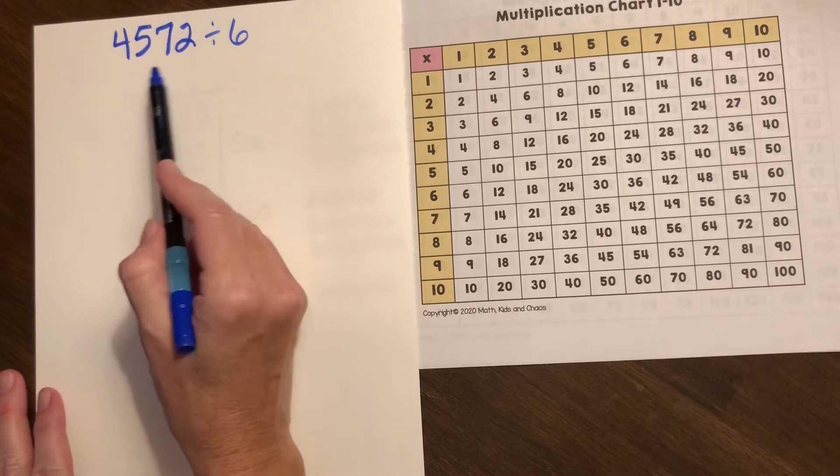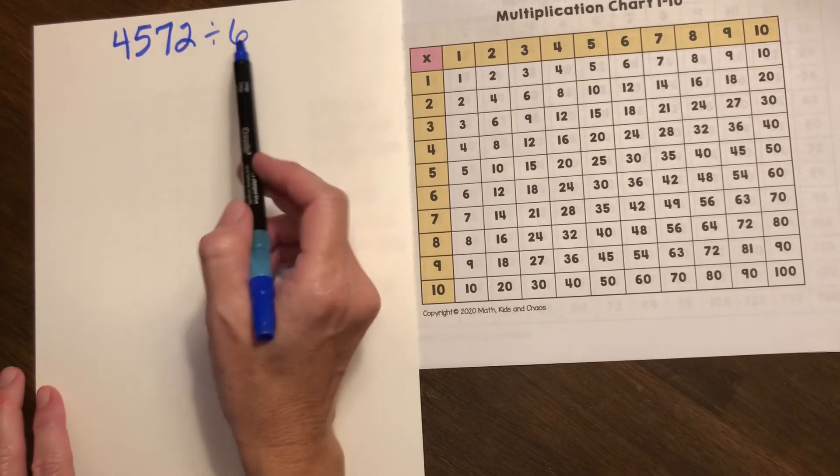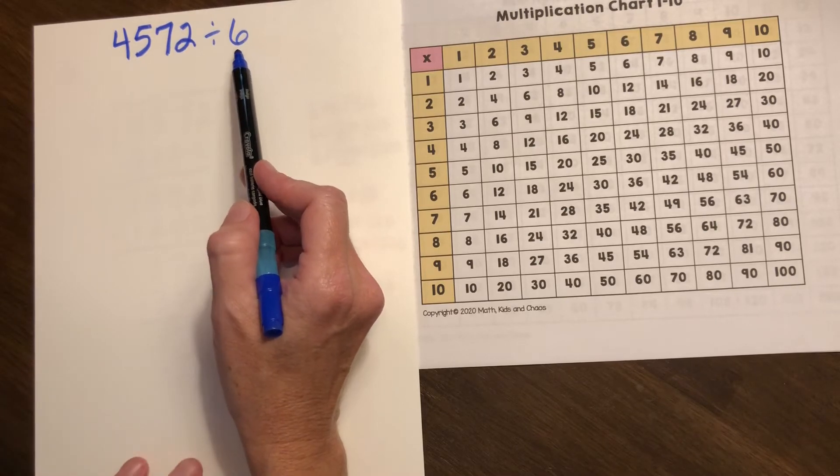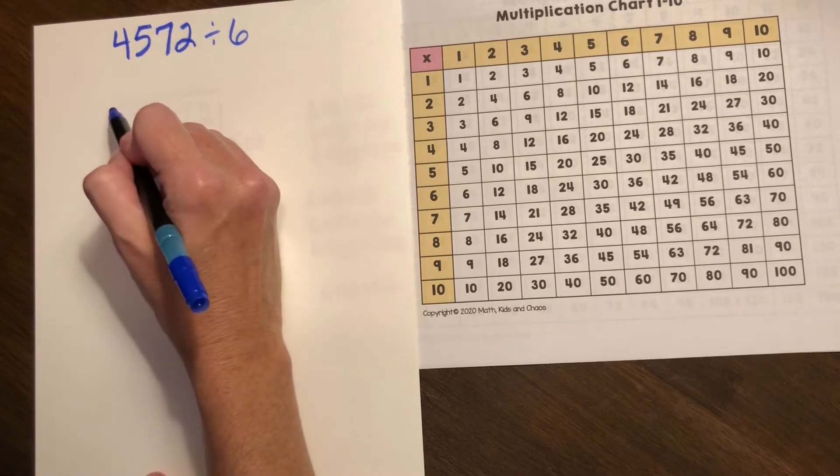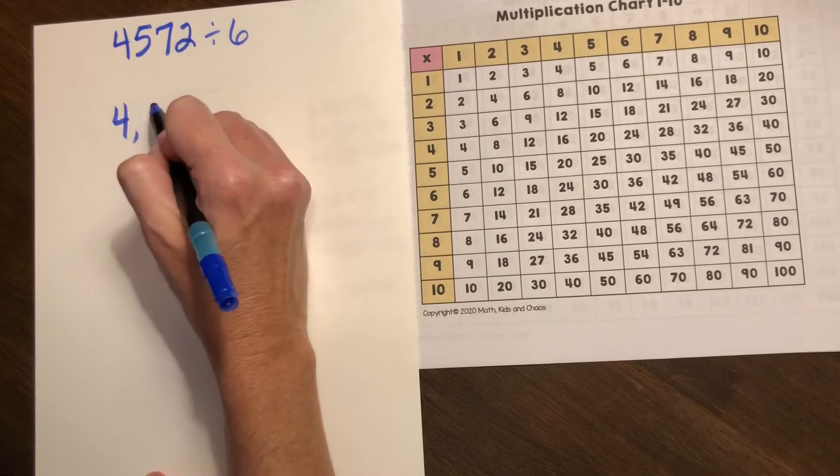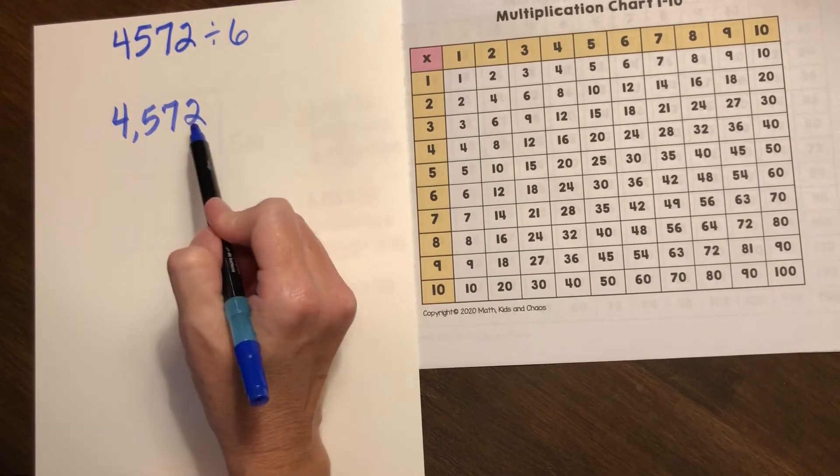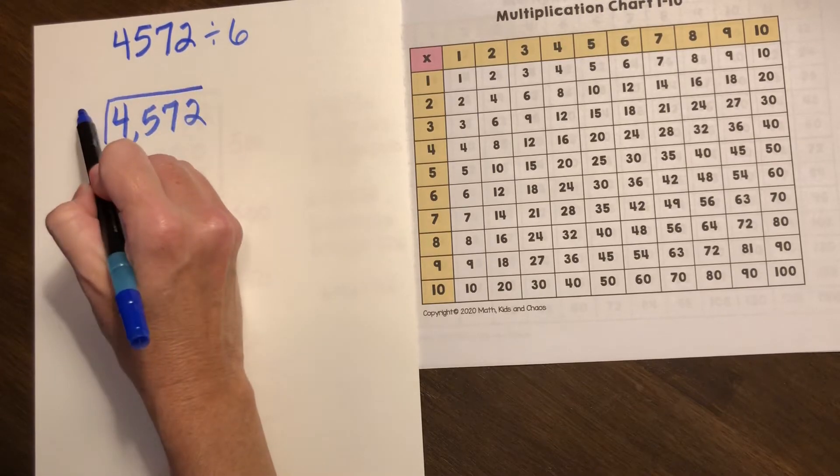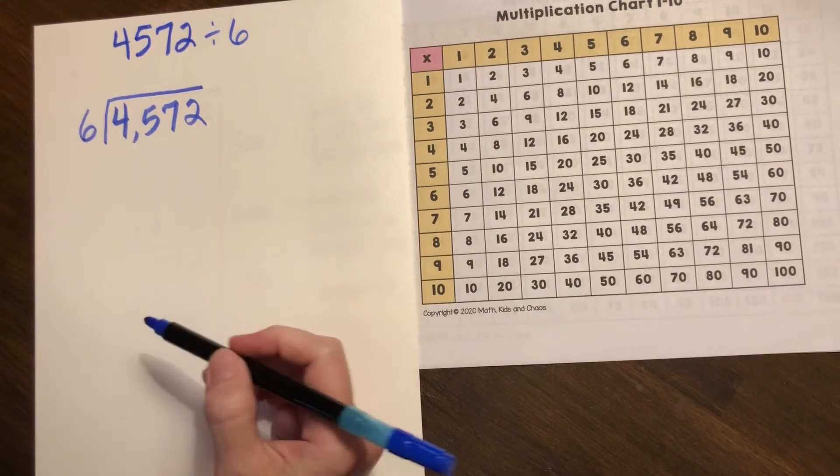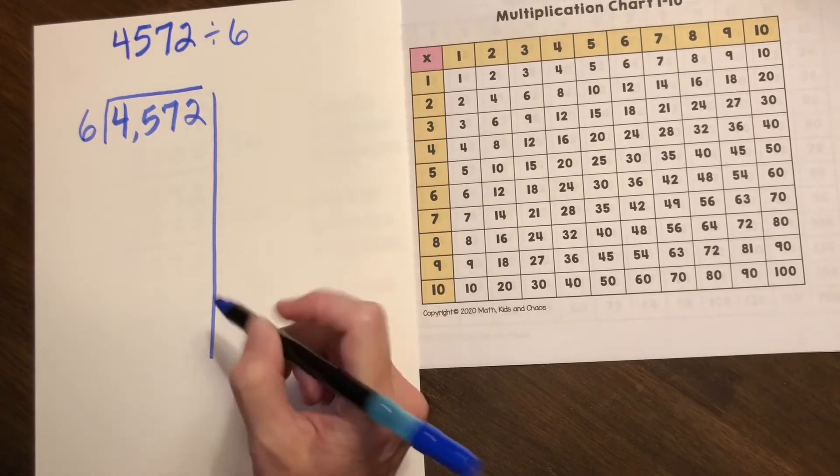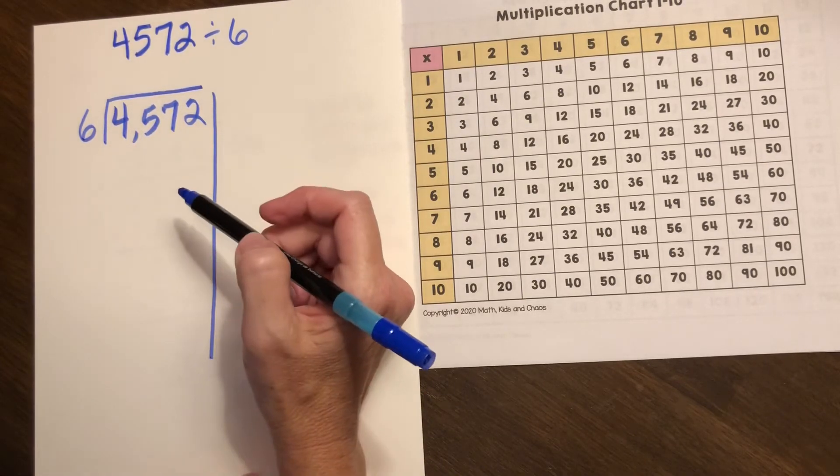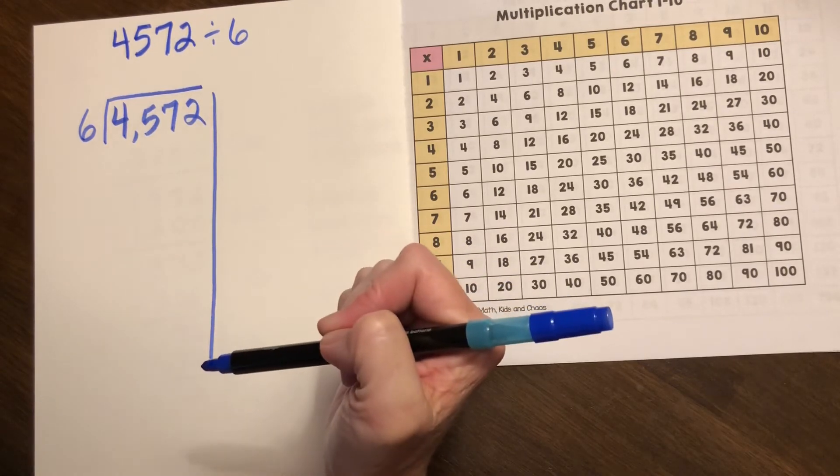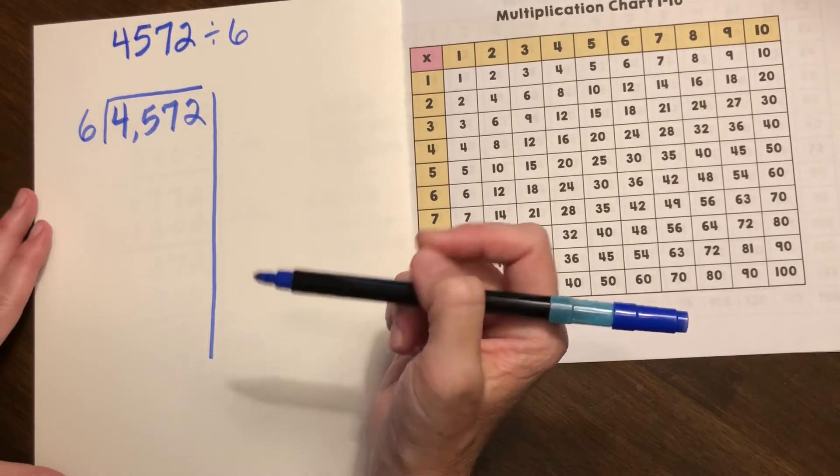All right we're now going to use a four digit dividend and divide again by a single digit divisor. So we have 4572. We're going to set up that dividend, the number we're dividing, we're going to divide it by groups of six. So we're setting it up the exact same way, we just have a four digit dividend instead of a three digit. Make sure you have that vertical line to organize your partial quotients.